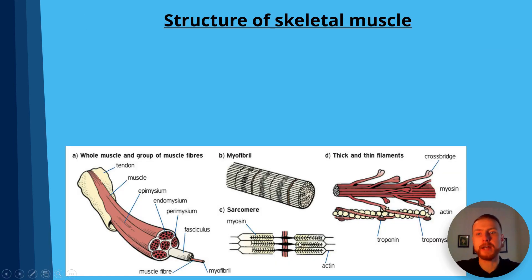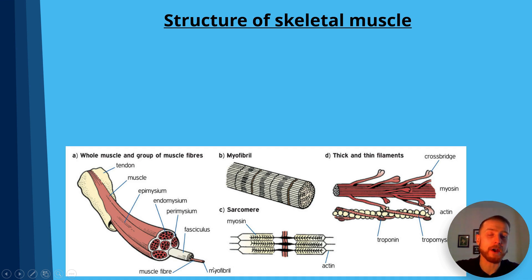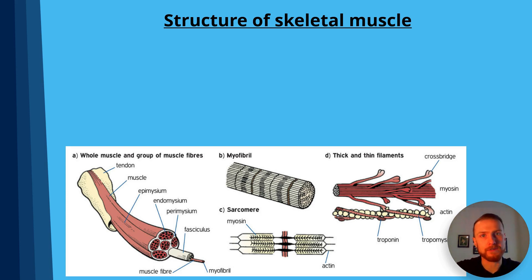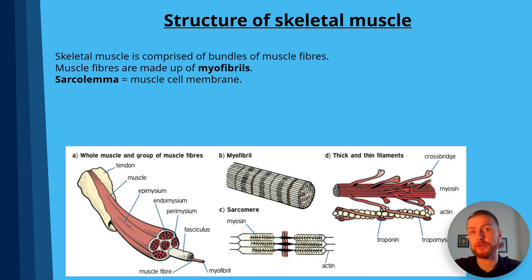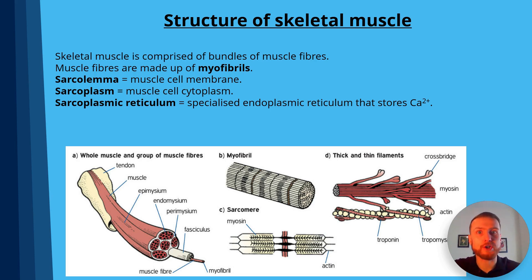Let's look at the structure of skeletal muscle. Tendons connect muscles to bones, and from the muscle we have the epimysium, endomysium, and perimysium, which lead down into the muscle fibres and finally myofibrils. Myofibrils are made up of functional units of contraction known as sarcomeres, which are made up of thick and thin protein filaments known as myosin and actin. Each muscle fibre is made up of myofibrils. The sarcolemma is the muscle cell membrane, and the sarcoplasm is the muscle cell cytoplasm.